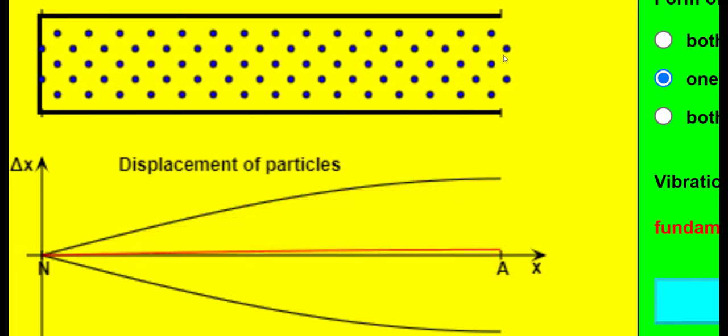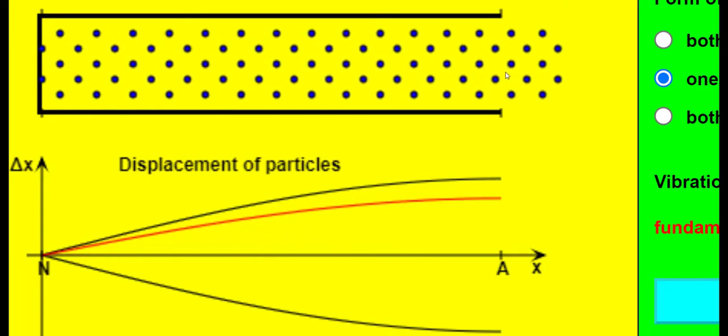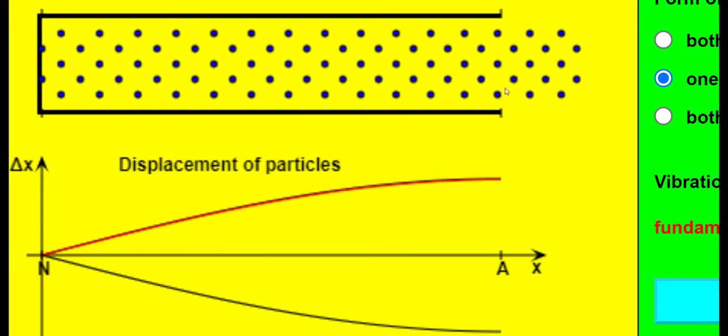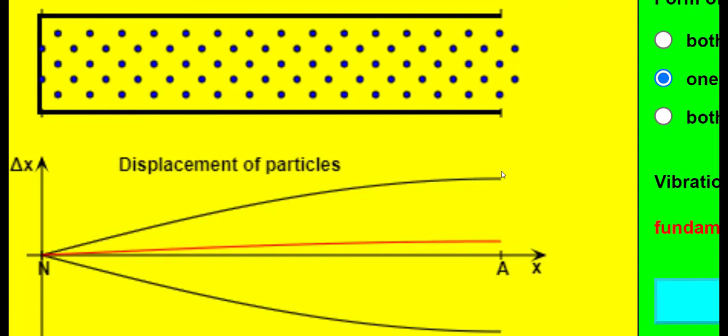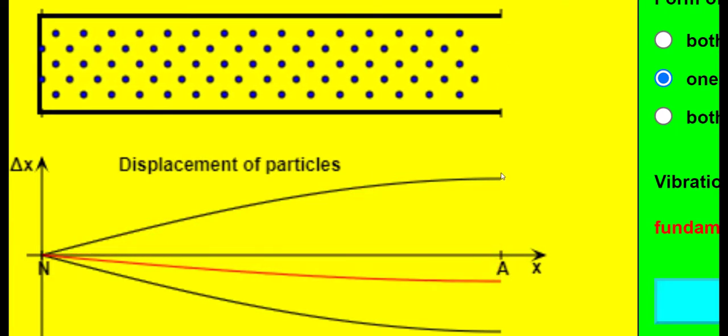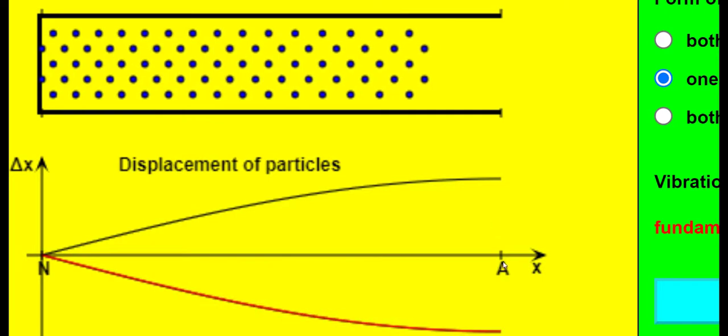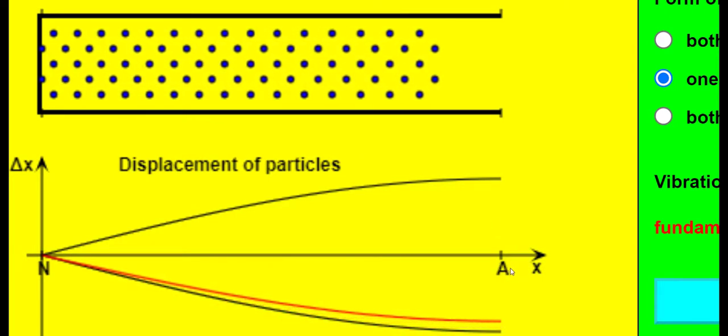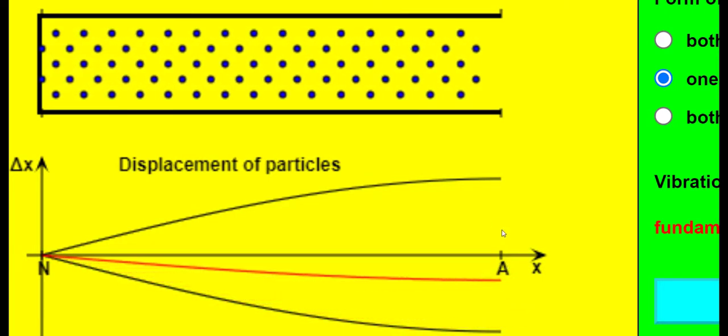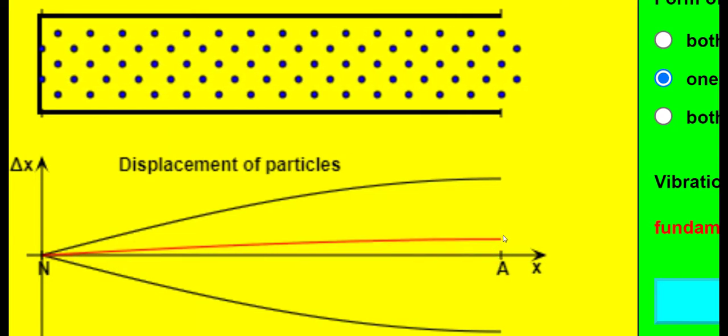We see that the particles at the right end of the tube are oscillating with maximum amplitude. In other words, there's an anti-node at the open or right end of the tube. Notice the A here, which stands for anti-node. This stationary wave pattern is called the first harmonic.